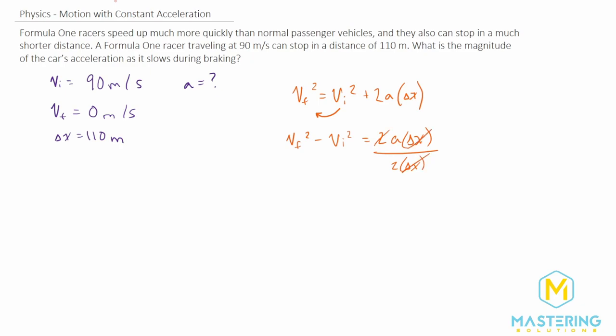Now that will go away, that will go away, divide by two delta x. So now we have acceleration is equal to v final squared minus v initial squared over two delta x.